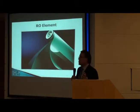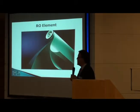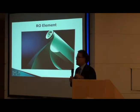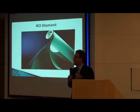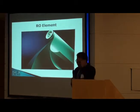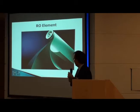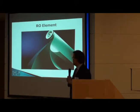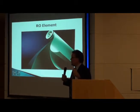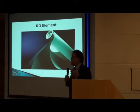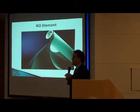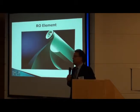The reverse osmosis membrane element used for desalination is rolled up like you roll up a poster. It has the consistency of photo paper — like the kind you'd put into your HP printer. The membrane is separated by nylon spacers and rolled up tightly. These elements are 8 inches in diameter, about 40 inches long, and in the latest generations of membranes, there is about 400 square feet of membrane area rolled up tightly into each element.